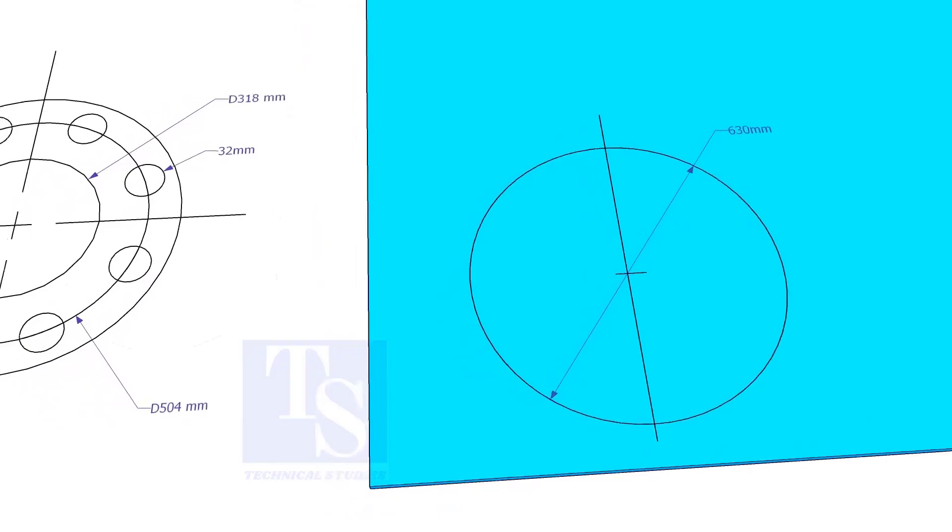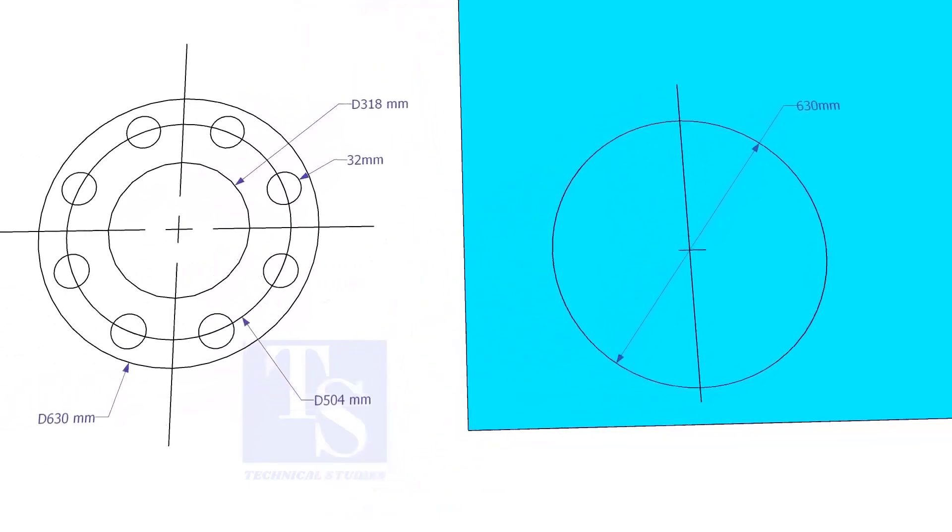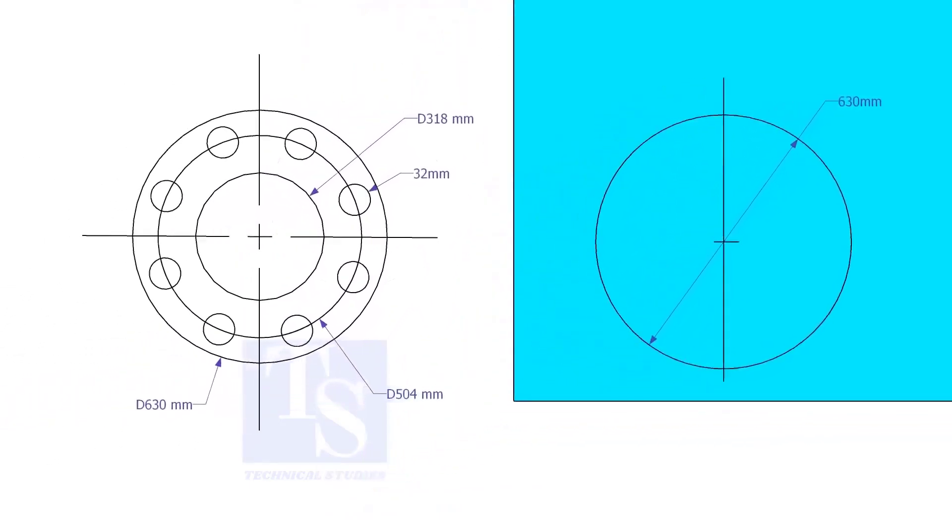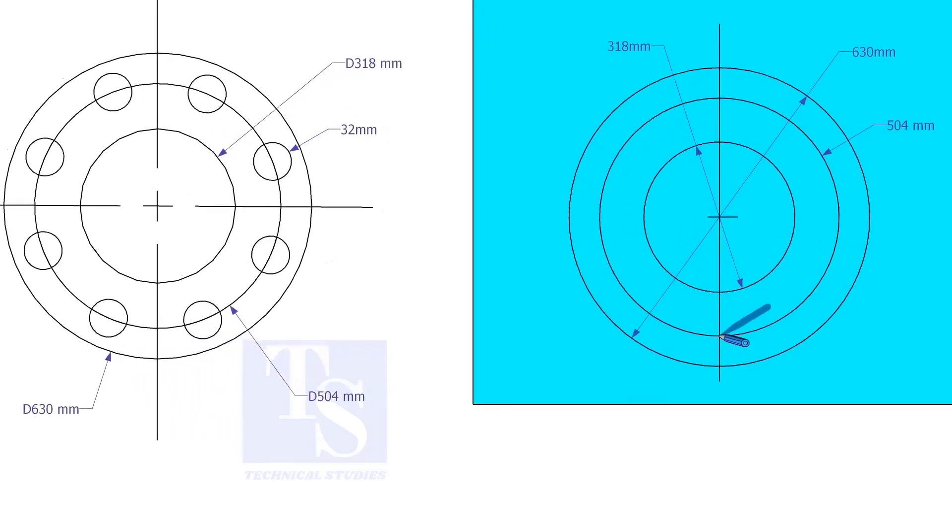Draw the OD and the ID circles. Draw the PCD. Punch mark where the PCD circle cuts the center line.